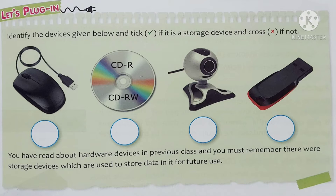There are some pictures in front of you. You have to identify if it is a storage device or not. First is the picture of a mouse. Mouse is an input device. It is used to control the movement of the pointer to select an object and open files and folders.